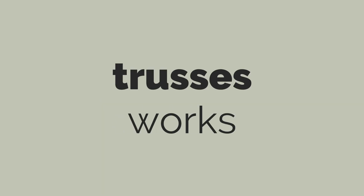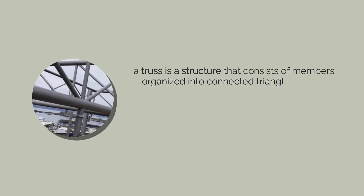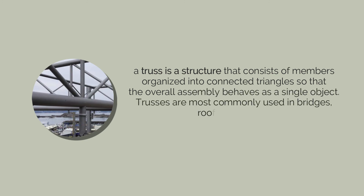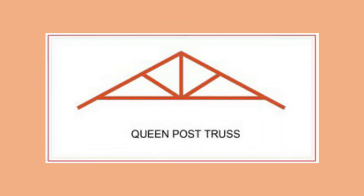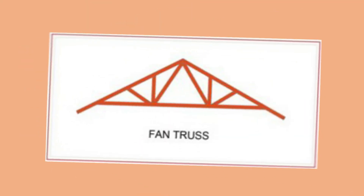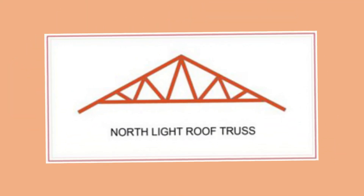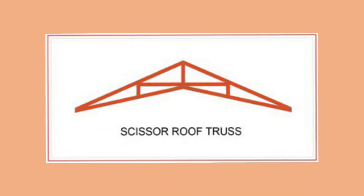After learning the various roofing materials and accessories, we move on to truss works. A truss is a structure that consists of members organized into connected triangles so that the overall assembly behaves as a single object. Trusses are most commonly used in bridges, roofs, and towers. The different kinds of trusses include: king post trusses, queen post trusses, Howe trusses, Pratt trusses, fan trusses, north light roof trusses, quadrangular roof trusses, parallel cord roof trusses, raised heel roof trusses, and scissor roof trusses.